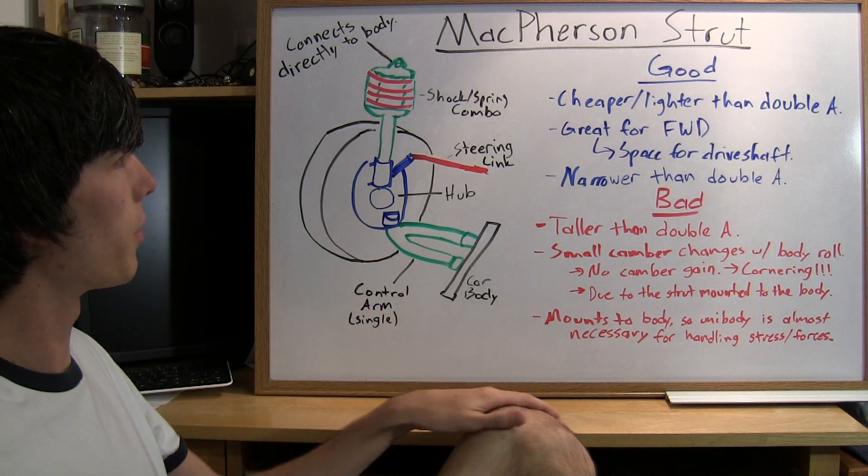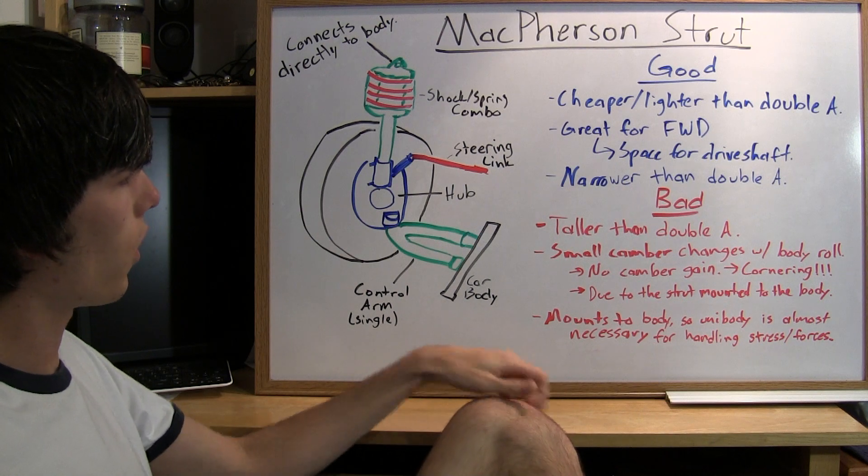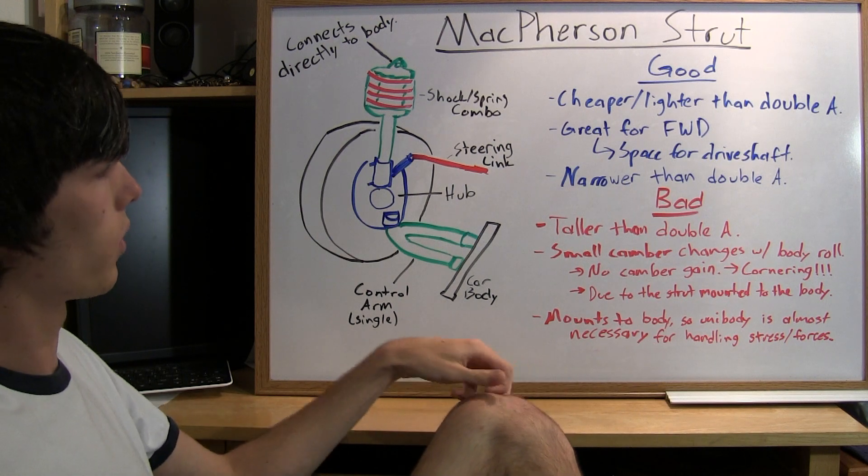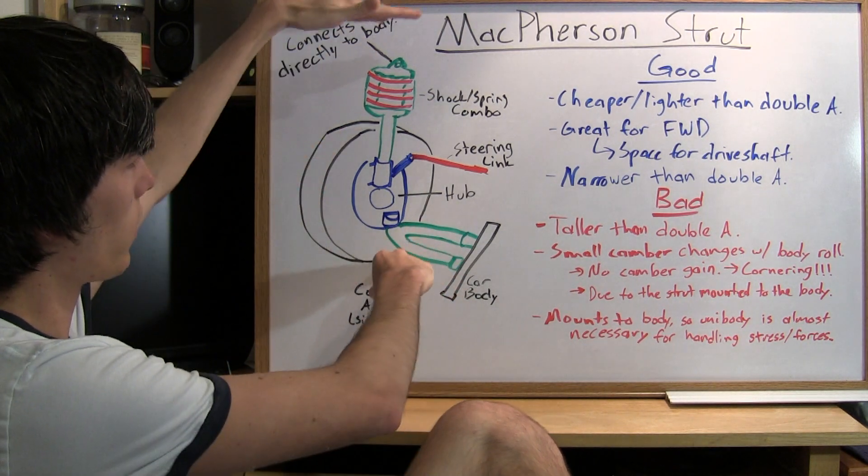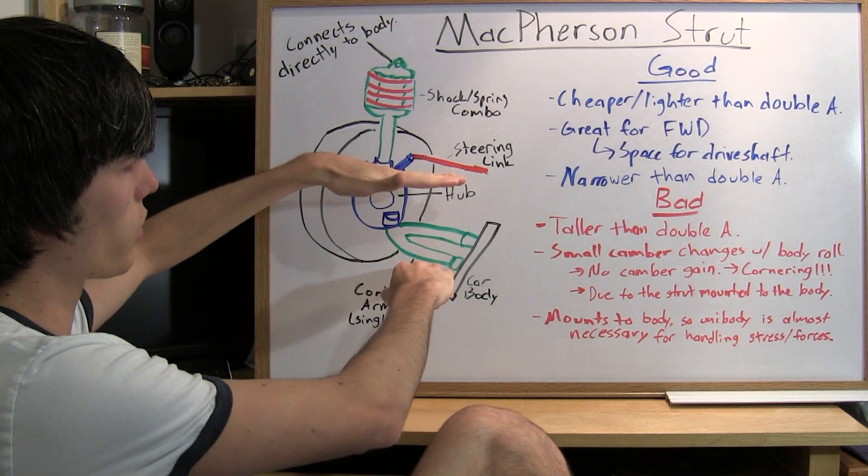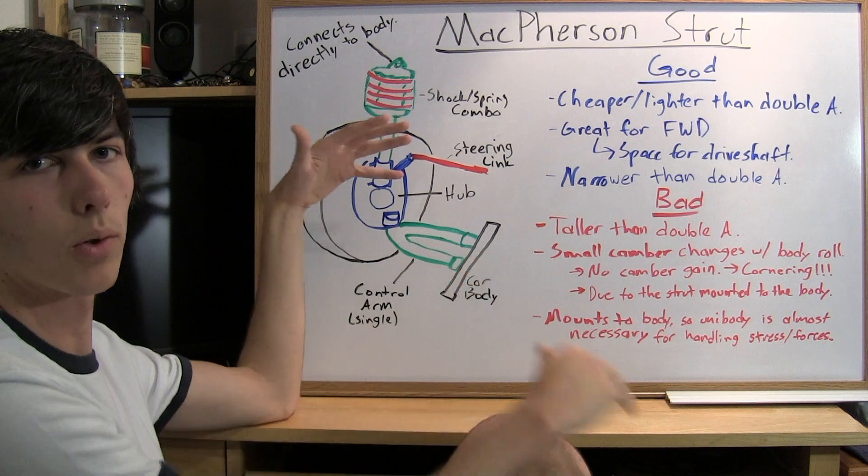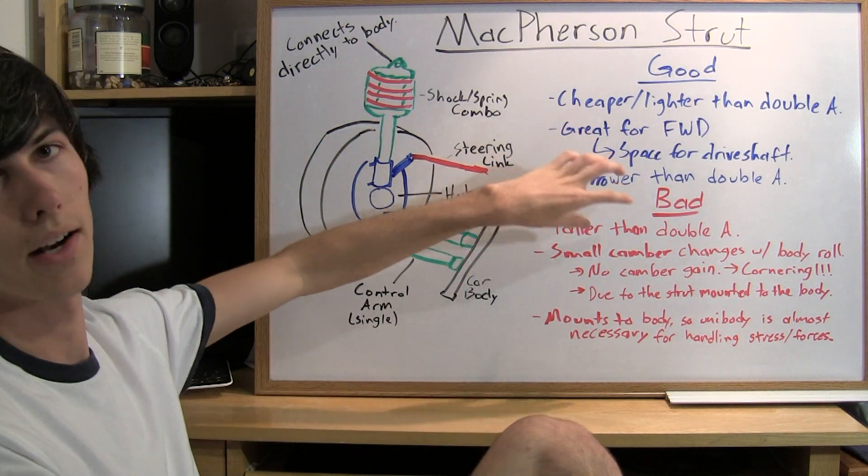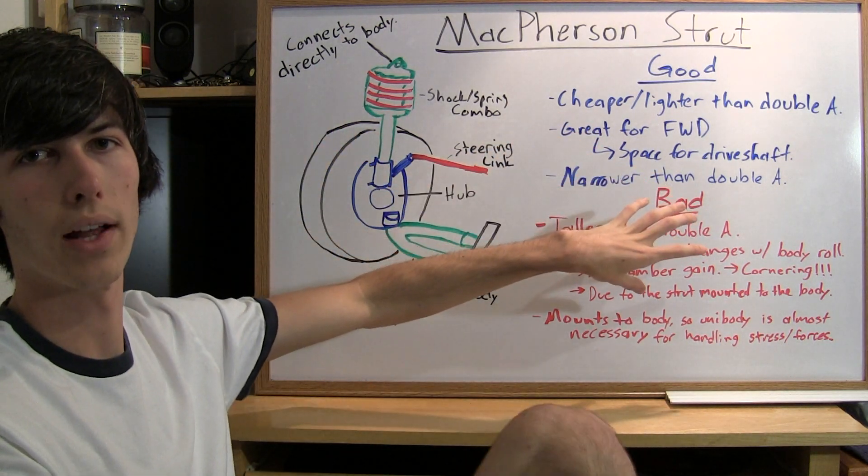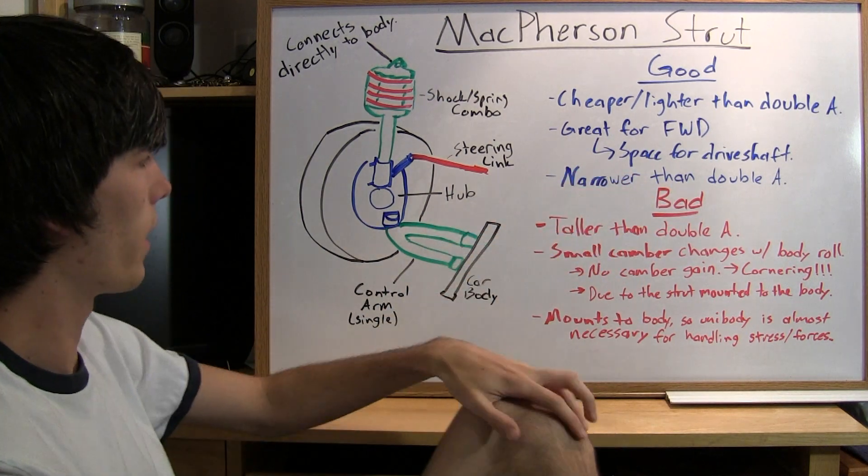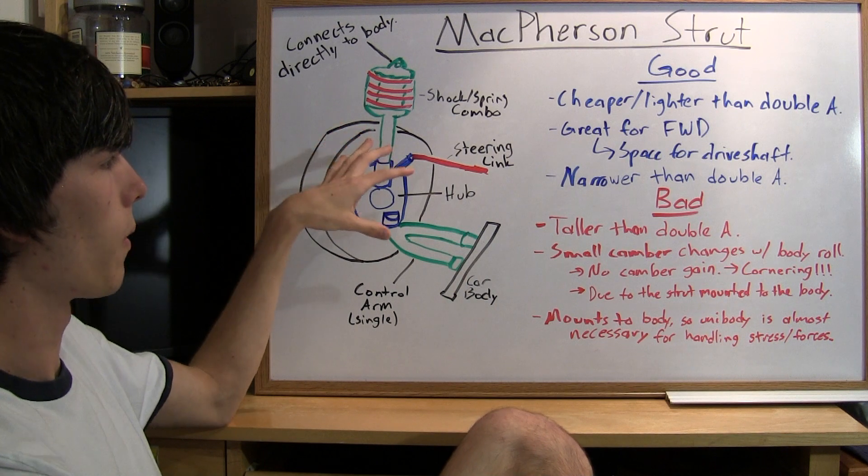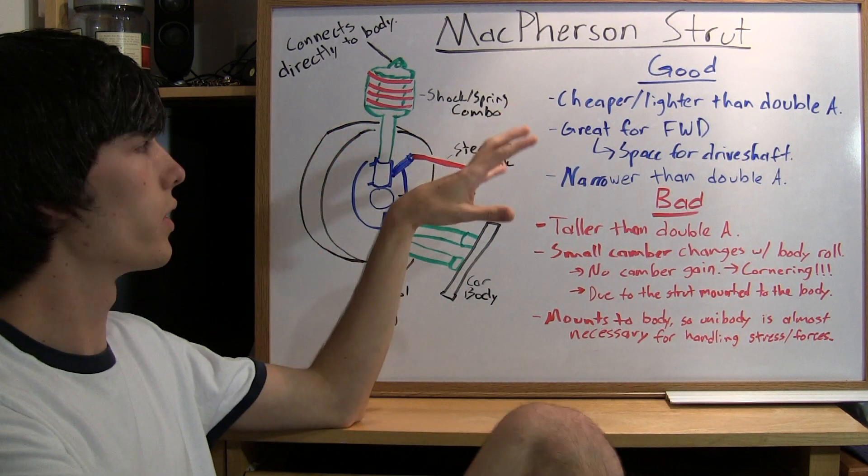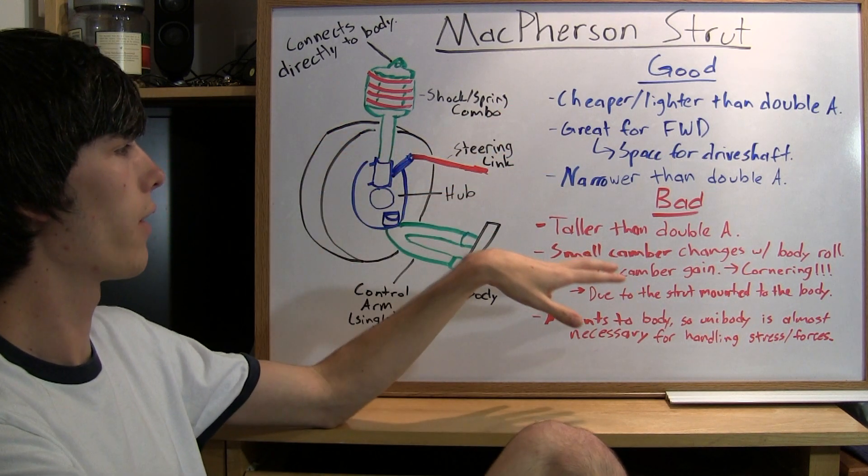So what's the bad part of a McPherson strut? Well, it's taller than a double wishbone suspension, meaning it takes up a lot of vertical space. With two control arms, you don't have that vertical space requirement. In some ways it can fit better, in some ways it won't. There are pros and cons to that side of it. Another issue is small camber changes with body roll. Unlike a double control arm, you don't have camber gain.